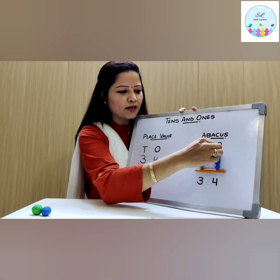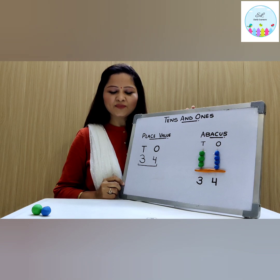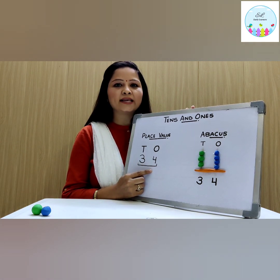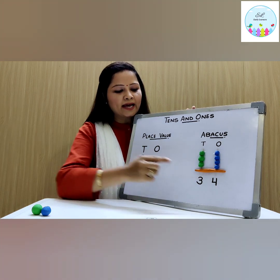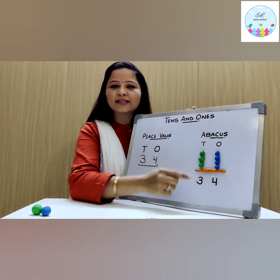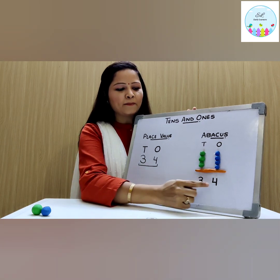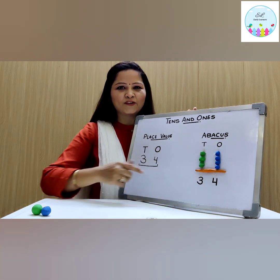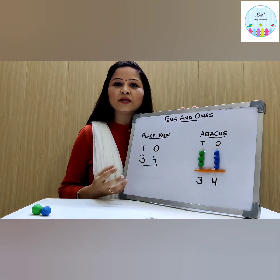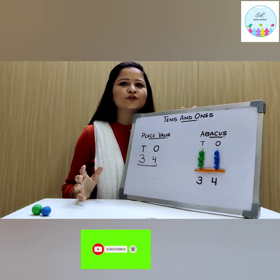This is a wonderful activity of creating an abacus at home. Through this activity we got to know that there were 34 sketch pens in total, and 3 is at tens place and 4 is at ones place — it tells the place value of these particular numbers. So try this activity with more numbers and more equipment — you can take toys, matchsticks, pencils, anything that you have.